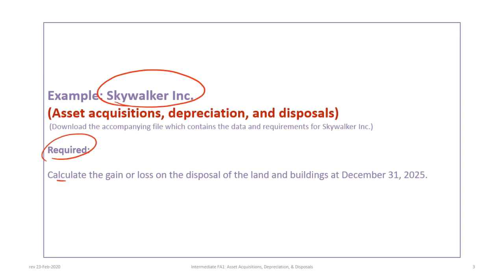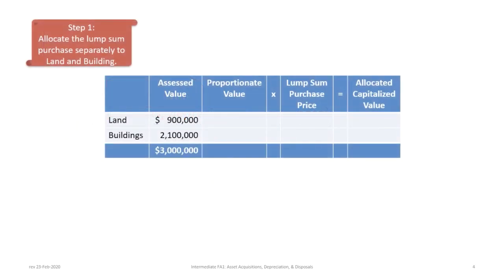We have only one requirement in this problem: to calculate the gain or loss on disposal of the land and buildings at December 31st, 2025. That seems like a simple requirement, however we have to start from the beginning and record the initial acquisition, then the depreciation, then a betterment, then subsequent depreciation on a revised basis, and then the disposal. The first step in a lump sum acquisition is to allocate the purchase price separately to the land and the building. A company will purchase land and building for a combined price, but when assessed separately those items have different values.